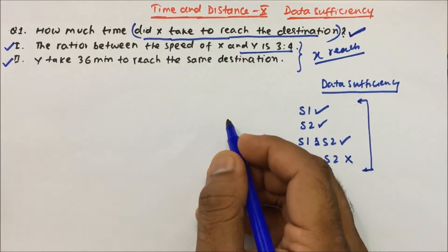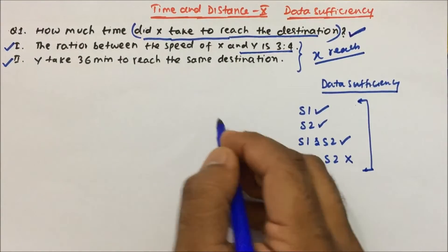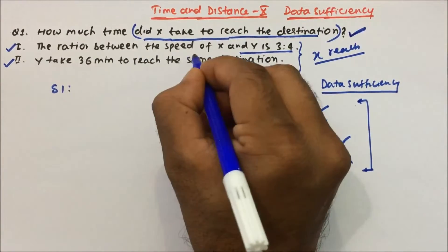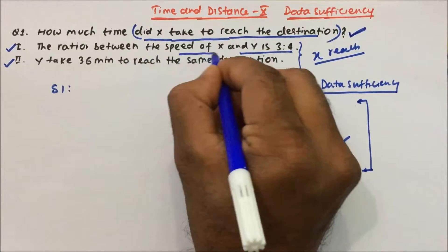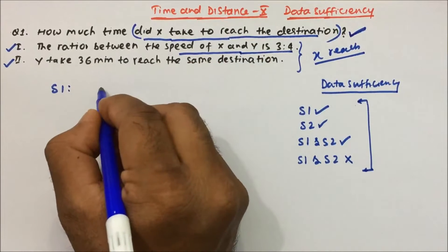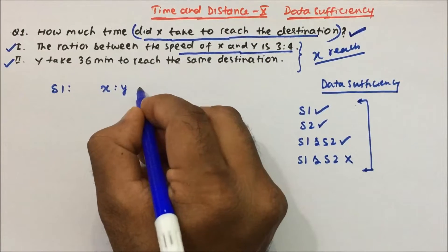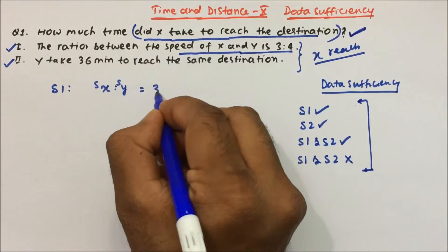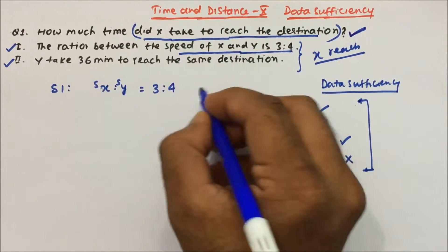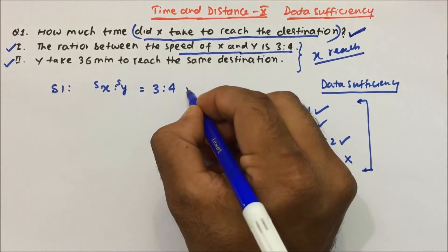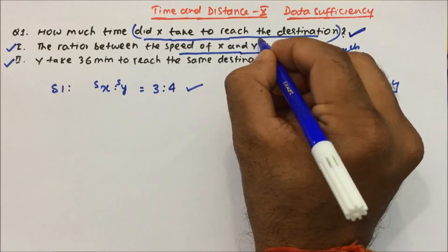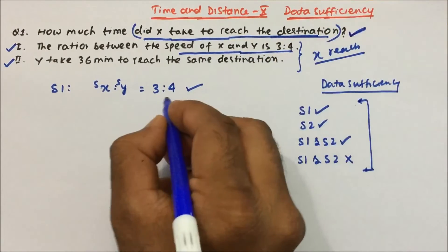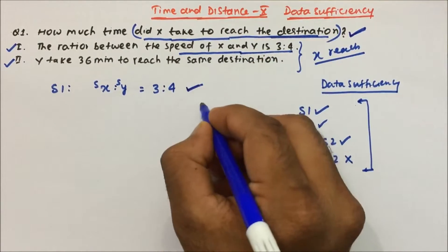Let's solve this question. Statement 1 says the ratio between the speed of x and y is 3:4. So the speed ratio of x and y is 3:4. From here we cannot directly conclude anything because they are asking how much time x takes to reach the destination, and this is given in terms of speed.